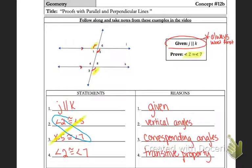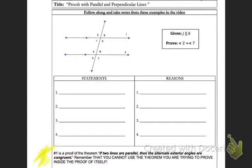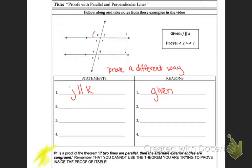I want you to notice that sometimes I write my angles different ways — it's the same thing, so don't let that confuse you. The next thing they ask you to do is prove the exact same thing using a different method. We're going to start with our given, then look at a different angle that angle 2 is congruent to. Angle 2 is congruent to angle 4, and my reasoning is that those are corresponding angles.